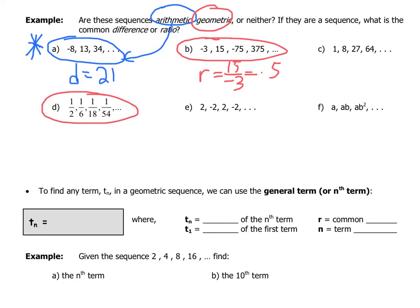Sequence D is also geometric, which might be surprising. Multiplying 1/2 by 1/3 gives 1/6. Multiplying 1/6 by 1/3 gives 1/18, and by another 1/3 gives 1/54. So the common ratio is 1/3, making this a geometric sequence.